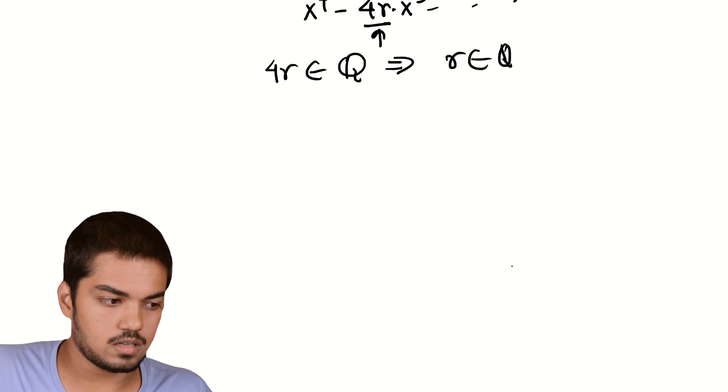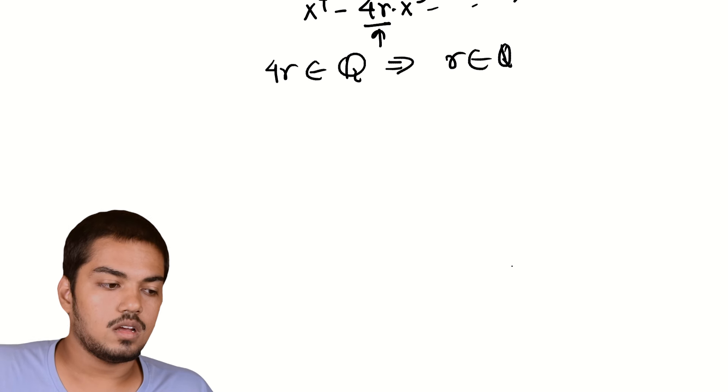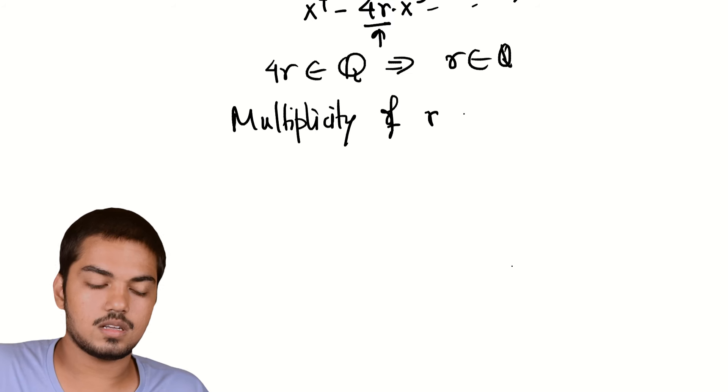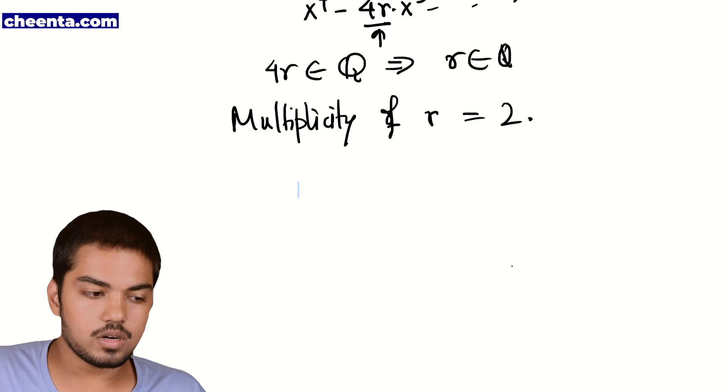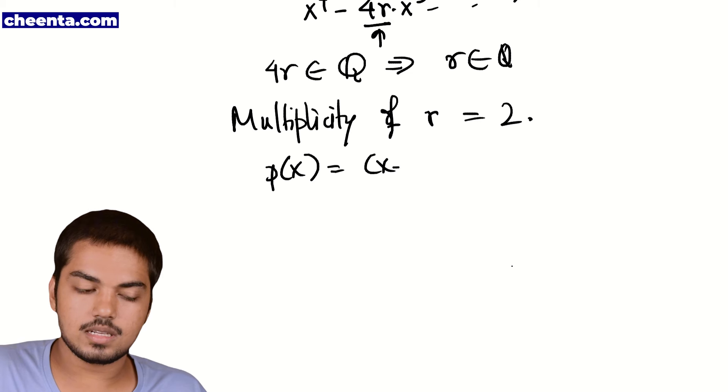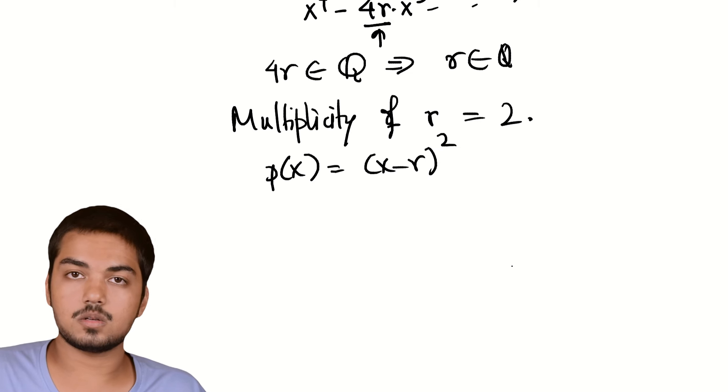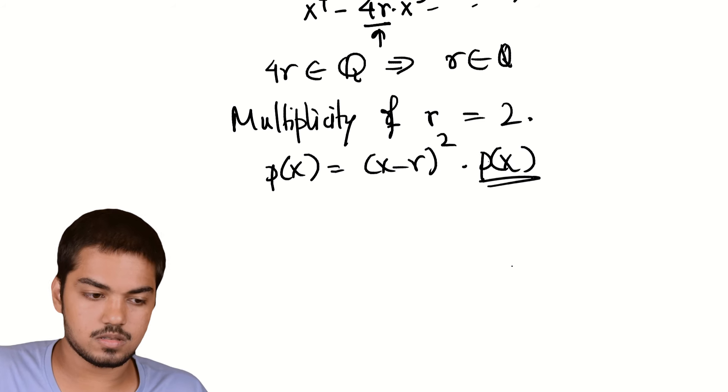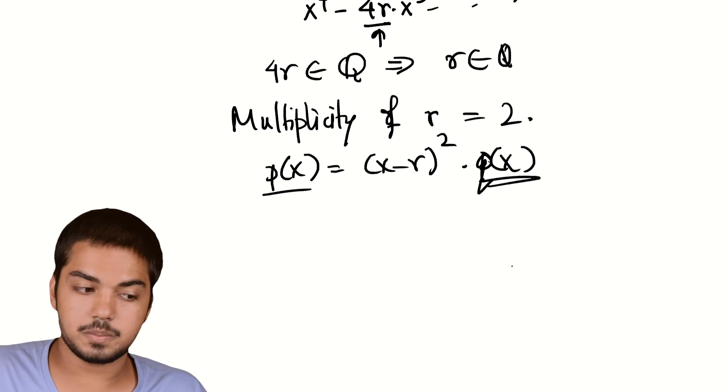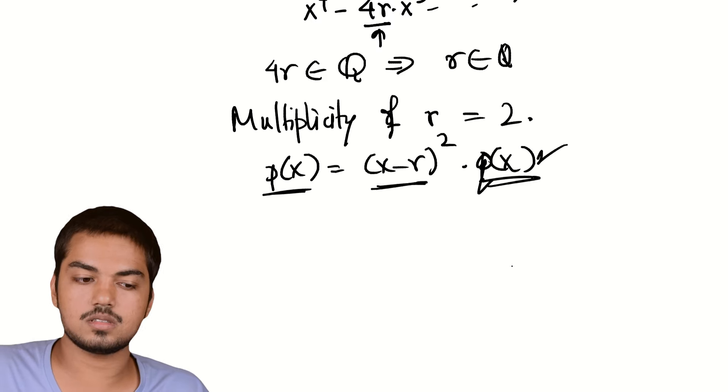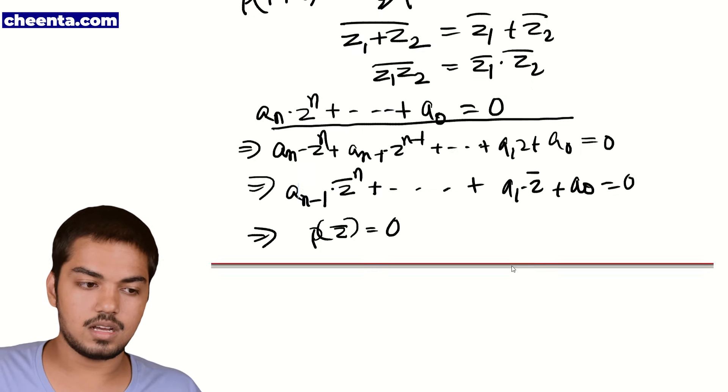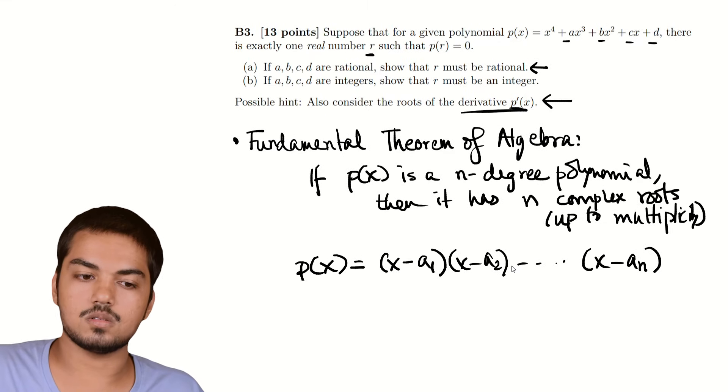A slightly harder case is that of case 2. Case 2 says that the multiplicity of r is 2. So, what does P(x) look like in this case? It looks like (x - r)^2 times some polynomial, which I know is 2 degree because, sorry, right, this is Q(x). Because P(x) is 4 degree polynomial and this is a quadratic, so this must also be a quadratic. I don't need to worry about that. This is where our hint is a very useful one.